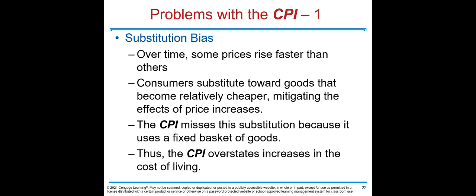Just as GDP is not a perfect measure, CPI inflation is not perfect either. The first problem is substitution bias. Over time some prices rise faster than others. When beef prices rise, people switch to chicken. The actual cost of living doesn't increase as much as CPI suggests, because CPI assumes a fixed basket. Consumers substitute toward goods that become relatively cheaper, mitigating the effects of price increases — but the CPI misses this, so it overstates the increase in the cost of living.